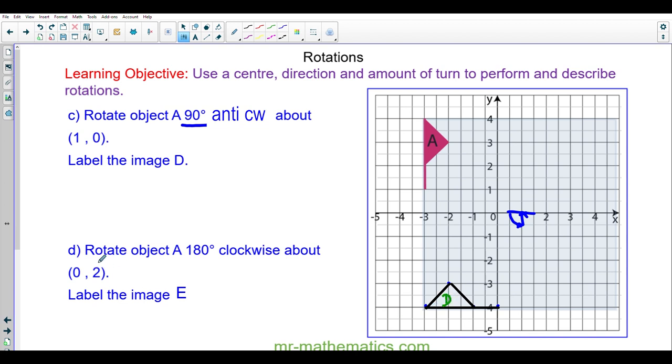Do you want to try the final question? Rotating object A 180 degrees clockwise about zero and two. Okay, so I'm going to mark off the center, put a point on each vertex in the object. I'm going to draw a straight line for the 180 degree rotation. And I'm going clockwise, which is in this direction.